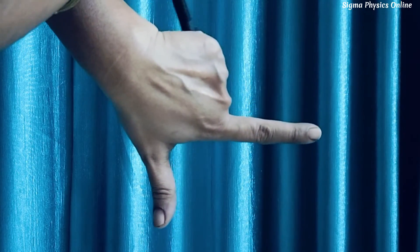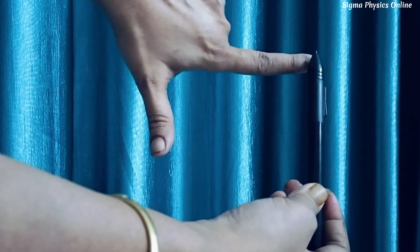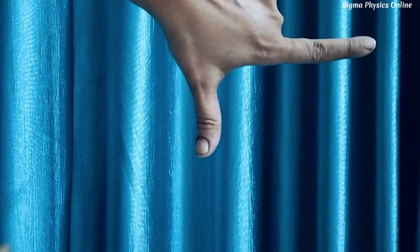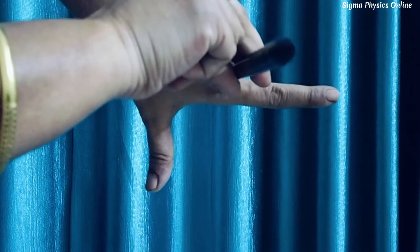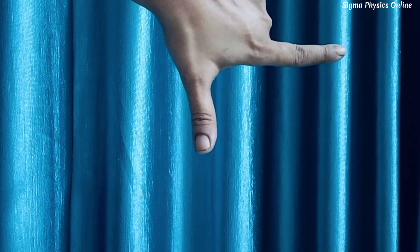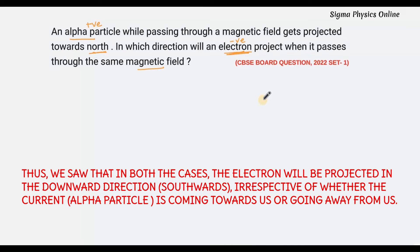With the current going away from our body, we point the middle finger away. The magnetic field is from left to right, current going away from our body — the thumb points downwards. So in both cases, the force on the electron acts in the downward direction, opposite to that of the positively charged alpha particle. Therefore, if the alpha particle is projected northwards, the electron will be deflected towards the south.